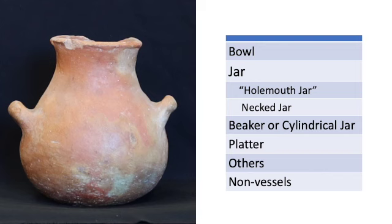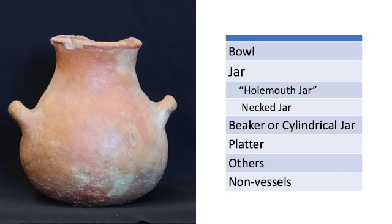By contrast, jars tend to be taller than they are wide, and they typically have constricted orifices, meaning that their rim diameters are less than their body diameters.